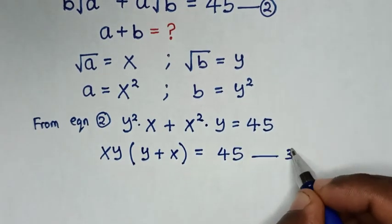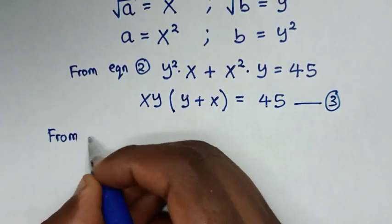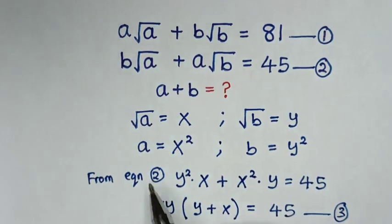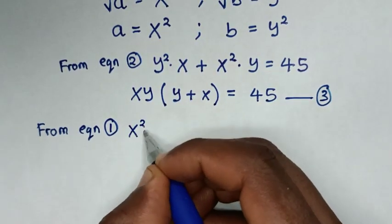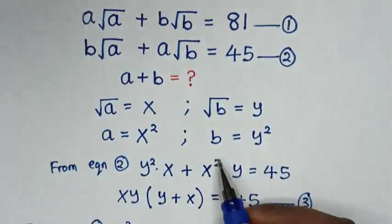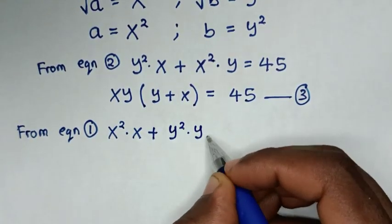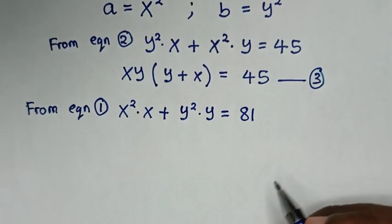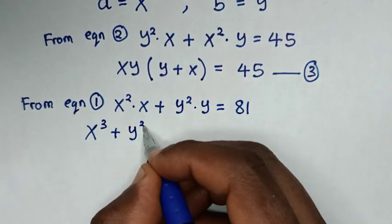Then the next step from equation 1: a times square root of a — a is x squared, square root of a is x — so it will be x squared times x. Plus b times square root of b — b is y squared, square root of b is y — so it will be y squared times y, is equal to 81.